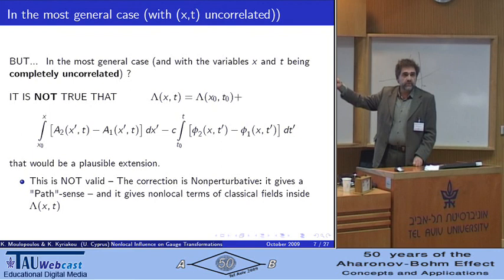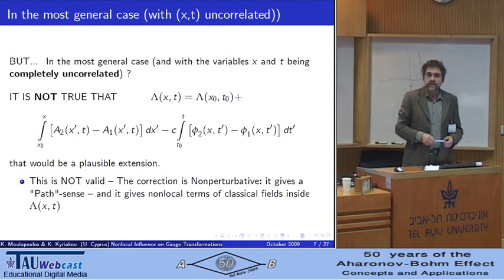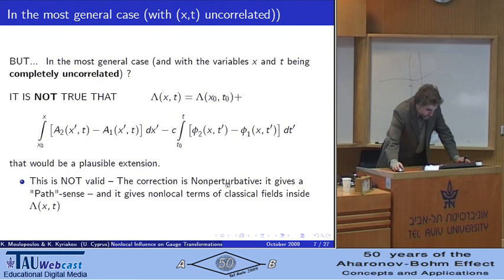This would be correct in a path integral language where the variables x and t are correlated in a way that they produce a path, a trajectory, but it's not correct when x and t are completely uncorrelated.